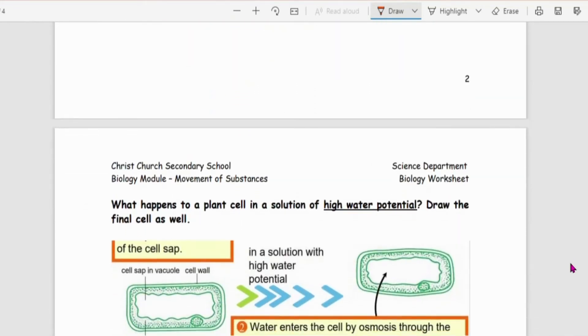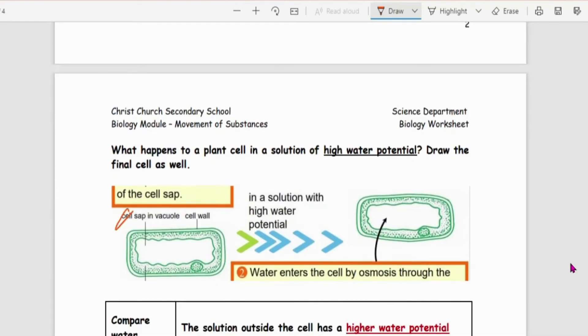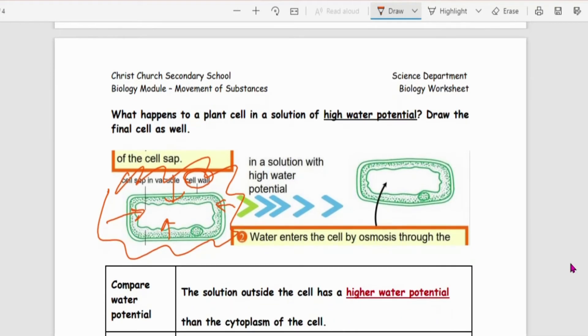Next one. Plant cell in high water potential. So outside has high water potential. Obviously this time around the water will go in. Now but what's the difference between animal cell and plant cell? Is that plant cells has this idea of a cell wall. So the cell wall helps to hold the cell in place. It doesn't cause it to burst.